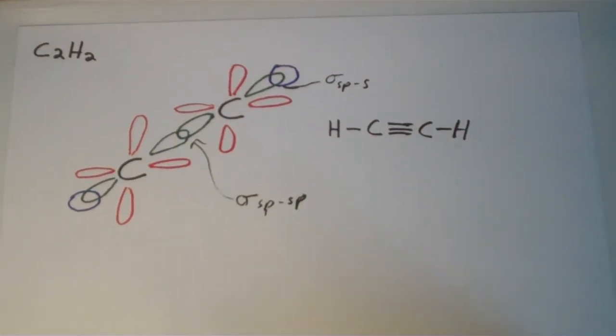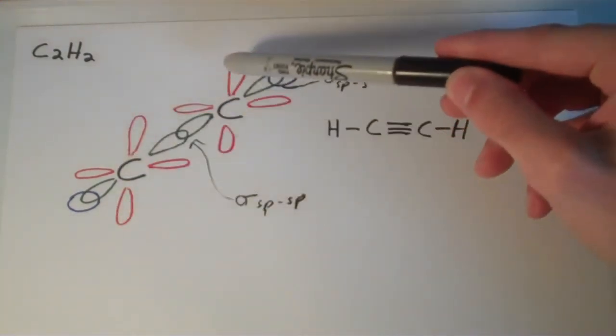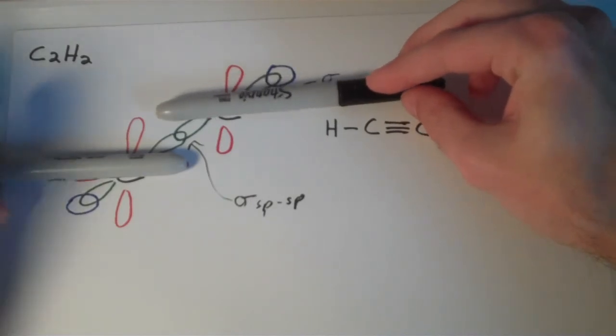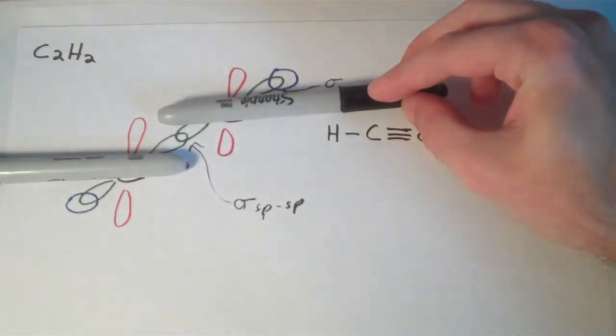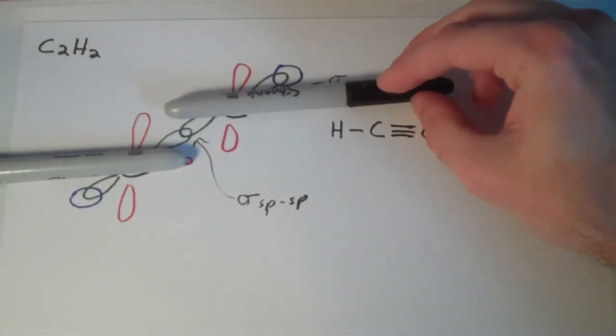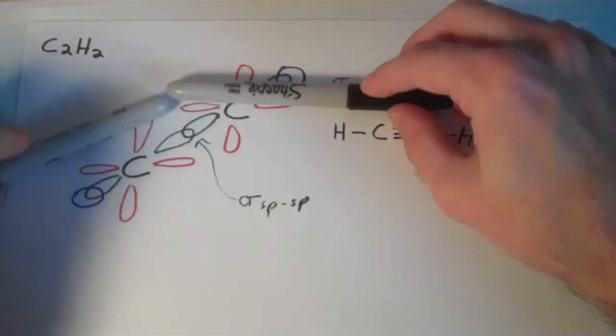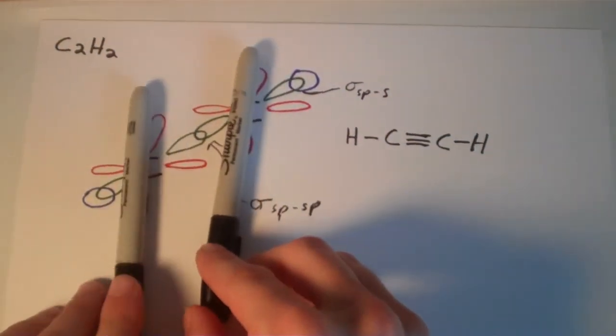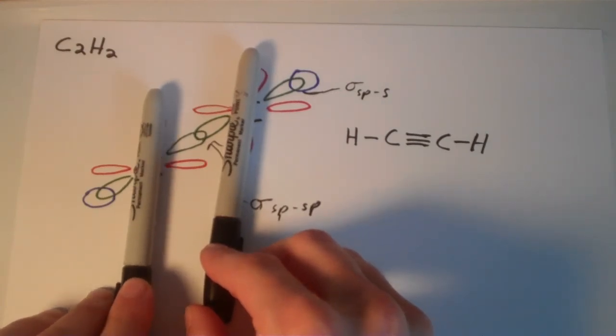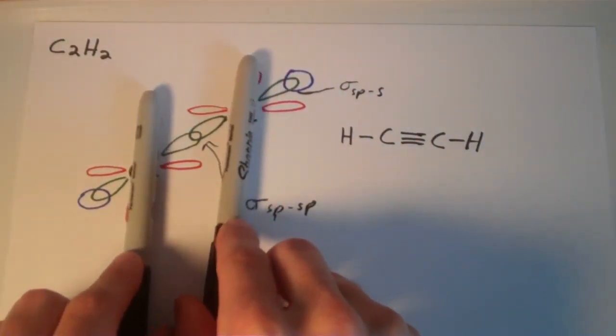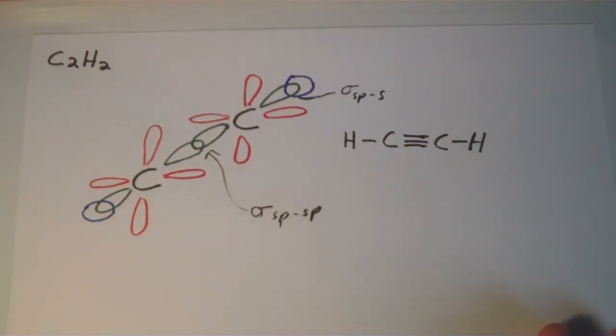Now let's look at the pi bonds. Remember, a pi bond is a sideways overlap of p orbitals. One of the pi bonds is between this orbital and this orbital. So that is one of the pi bonds, that orbital overlapping with that orbital. In this drawing they're not shown as overlapping, but that's just due to the artistic limitations that I have. That's one of the pi bonds, and then the other pi bond is between these two p orbitals. So there's one pi bond there and then the second pi bond down there. That's basically what sp hybridized atoms look like.